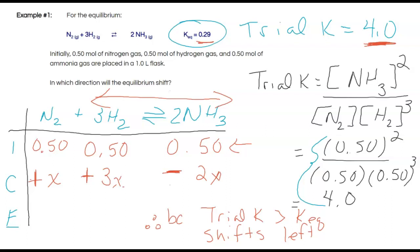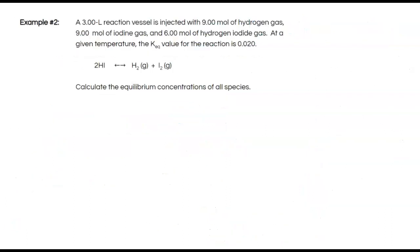Let's look at another question that involves even more calculations. A 3-litre vessel is injected with 9 moles of hydrogen gas, 9 moles of iodine gas, and 6 moles of hydrogen iodide gas at a given temperature. The K_EQ value is 0.020. The question asks us to calculate the equilibrium concentrations of all species. Always a good idea to start with an ICE box — pause the video, create your own ICE box, and resume when you are ready.